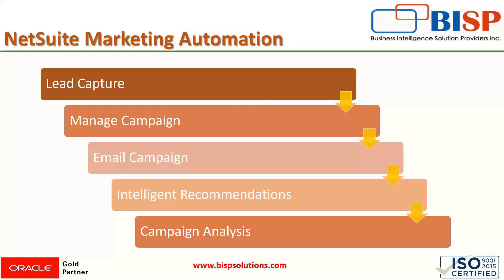Talking about NetSuite marketing automation, there are five steps we will be covering. Firstly, we have lead capture — NetSuite handles a variety of lead generation procedures. One way is leads can be captured using online customer forms, and another way is they can track the lead source for web store visitors. Then we have the feature of managing campaigns, where we can create and execute campaigns that give us maximum visibility into the impact each campaign has on the business.